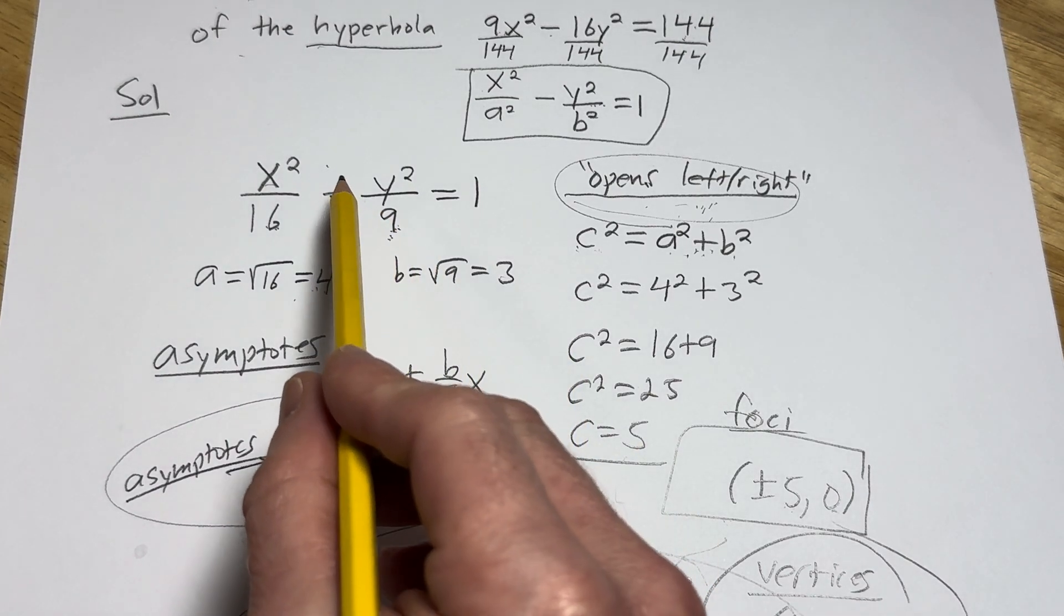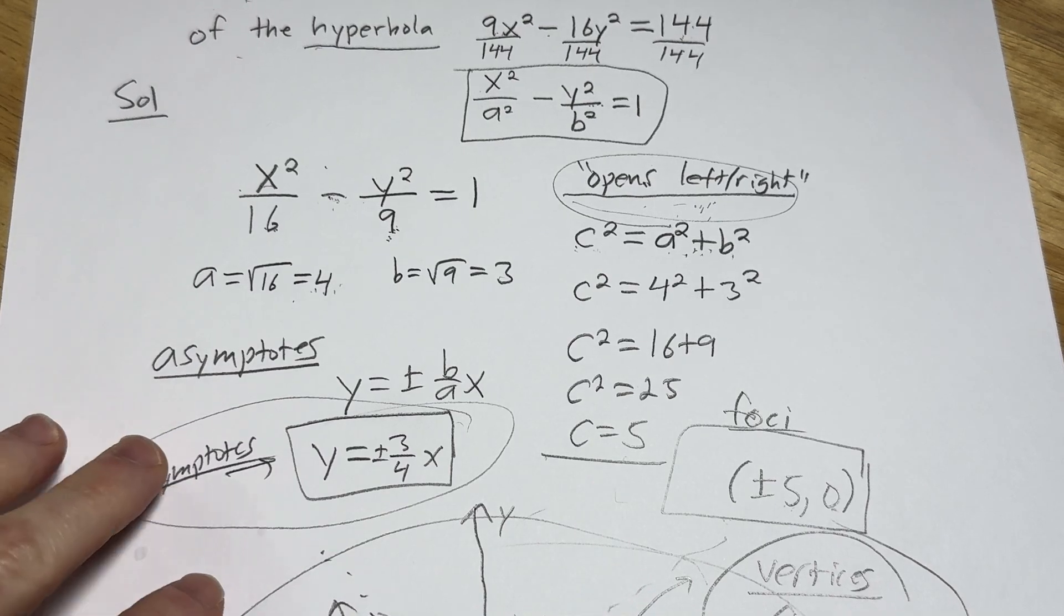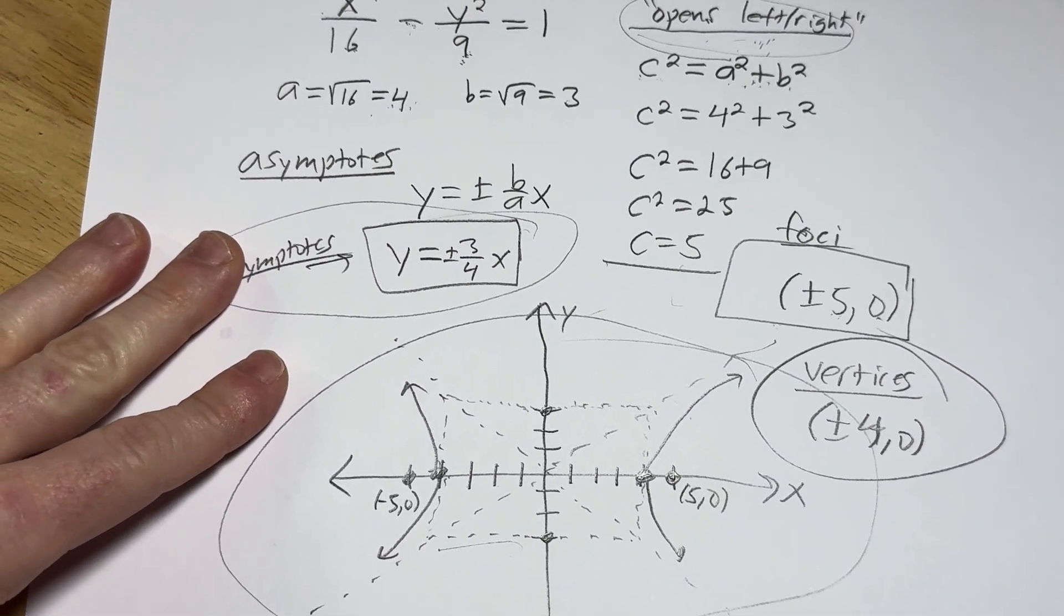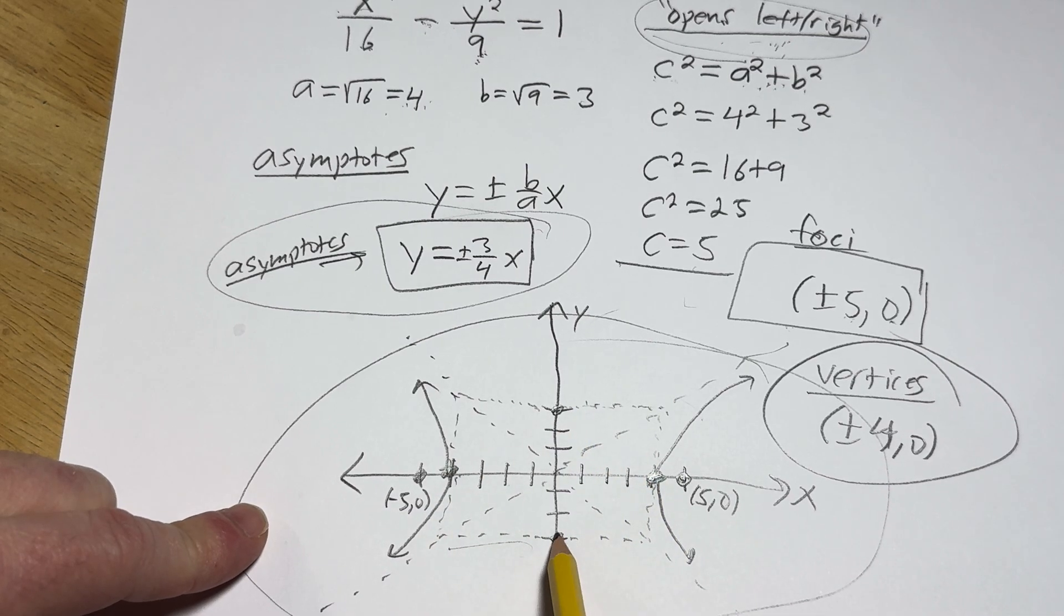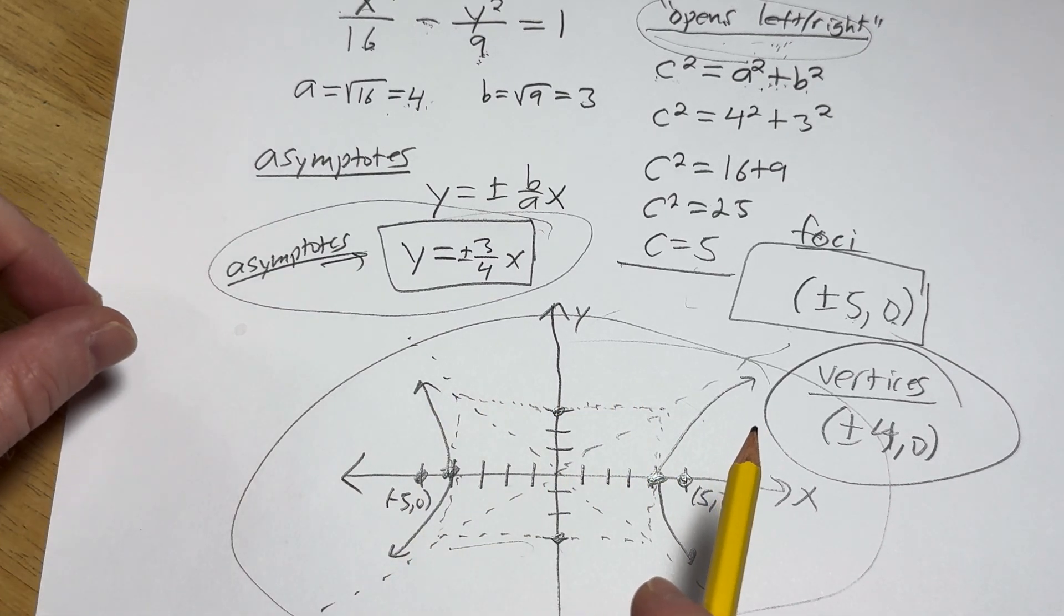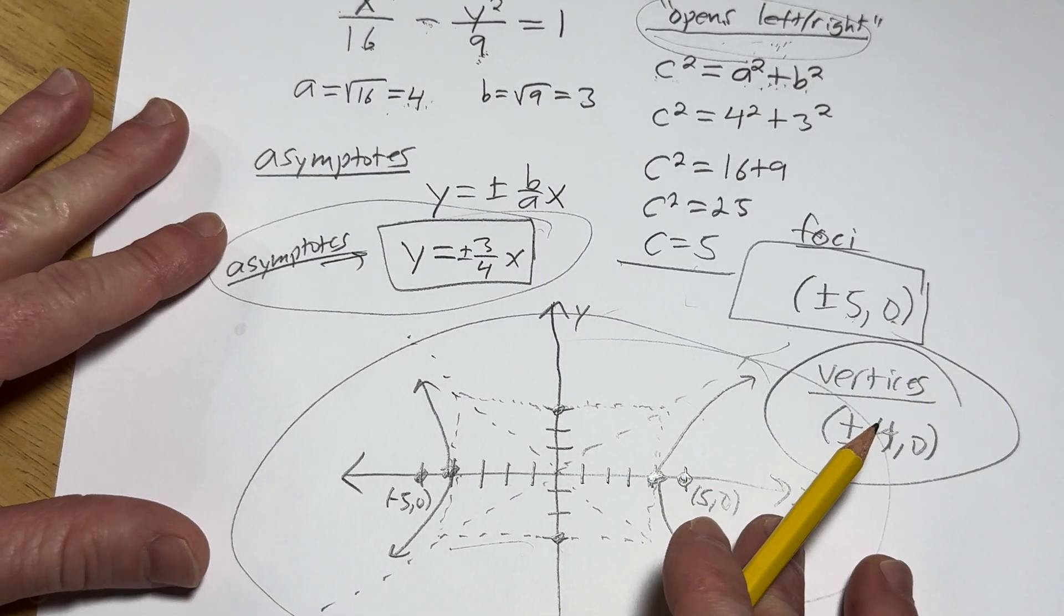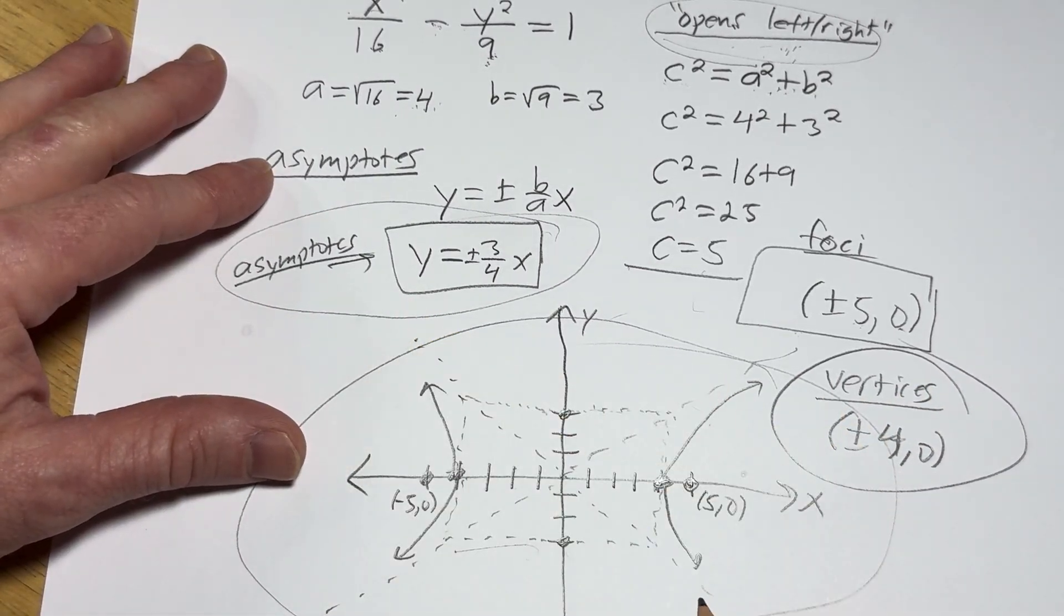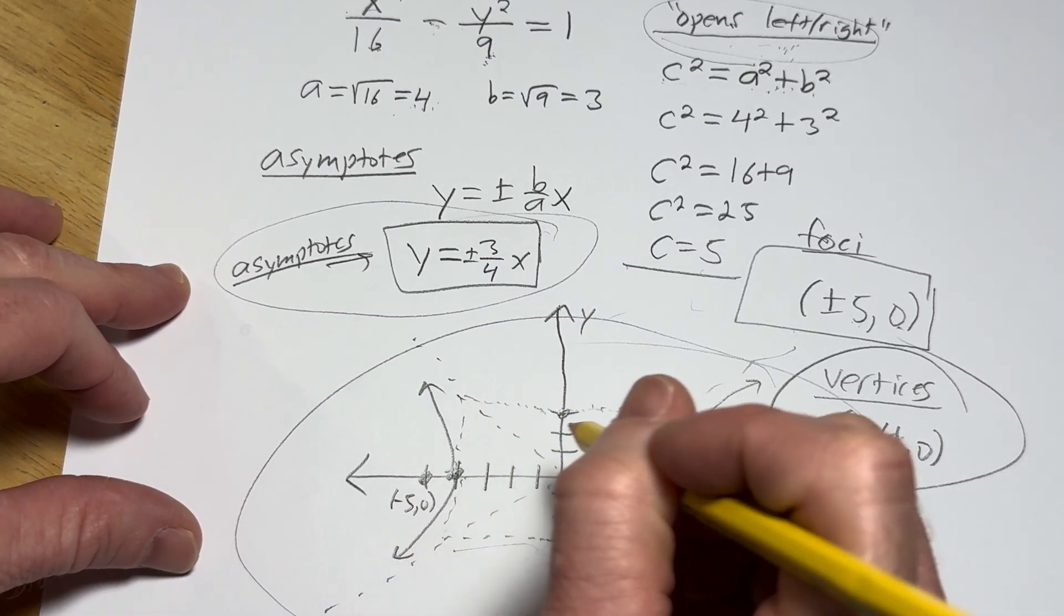The asymptotes are given by the formula y equals plus or minus b over a times x. However, if the y comes first, it's a over b times x. And then to graph it, because it opens left and right from the center, you go left and right by a, then you go up and down by b. You draw that rectangle. Again, it's called the fundamental rectangle. It has the word fun in it. And then you draw the asymptotes.